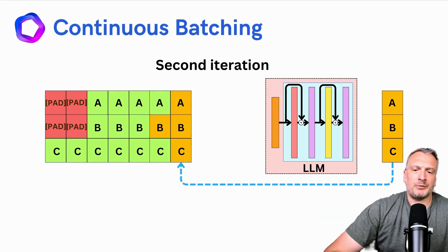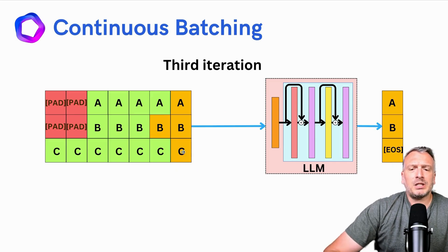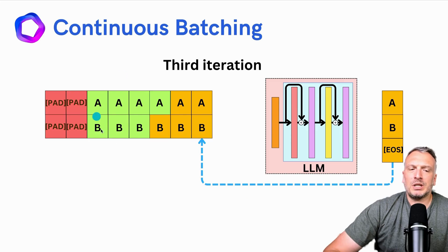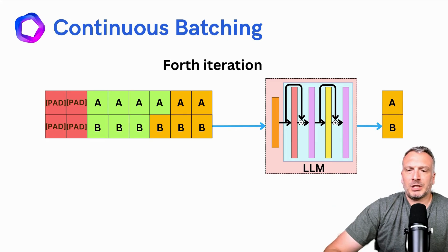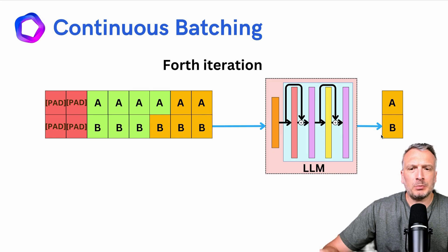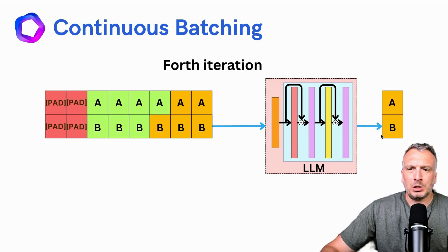We continue this autoregressive process, appending new tokens and continuing the decoding. In the third iteration, if the generated token for sequence C is the end-of-sequence token, instead of waiting for all sequences to be decoded, we can directly send the finished sequence C to the client and rebatch the other sequences. Sequence C does not need to wait for all sequences to finish. In the fourth iteration, we only deal with the remaining sequences. If you are building an application to handle multiple text generation requests, you need to be smart about batching, and continuous batching is one good strategy to use.